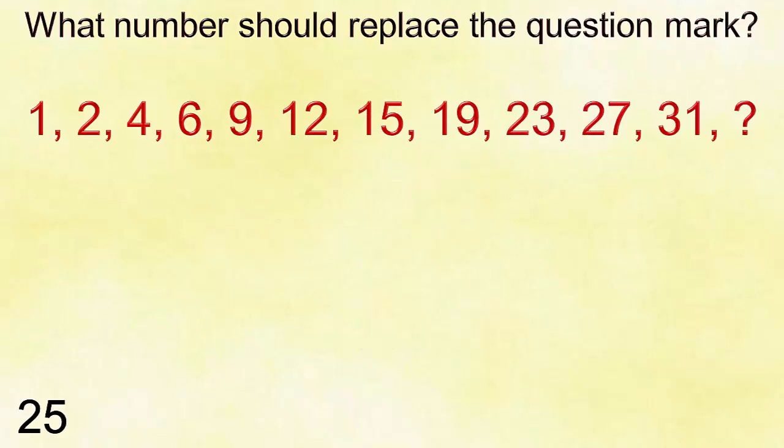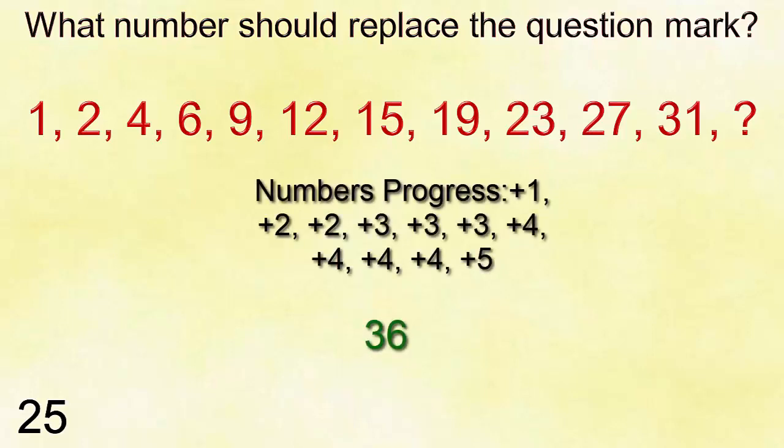Answer is five hundred fifty-two. Number twenty-five: one, two, four, six, nine, twelve, fifteen, nineteen, twenty-three, twenty-seven, thirty-one. Answer is thirty-six.